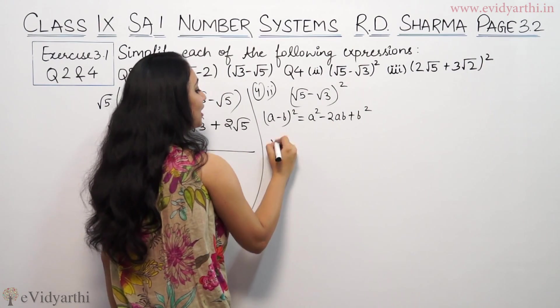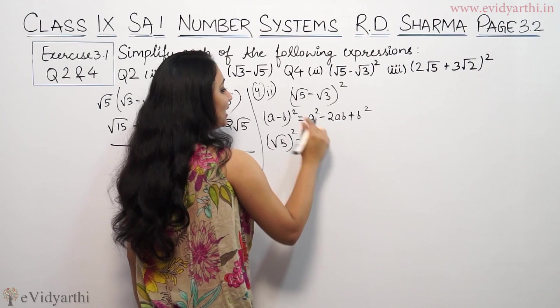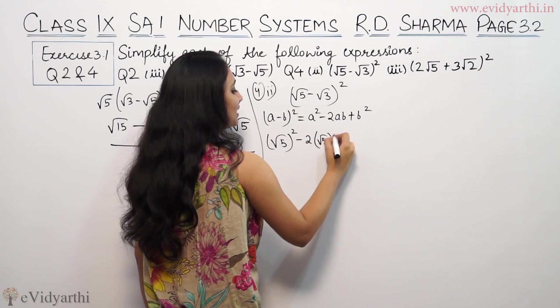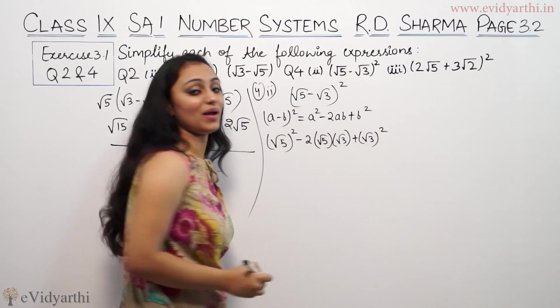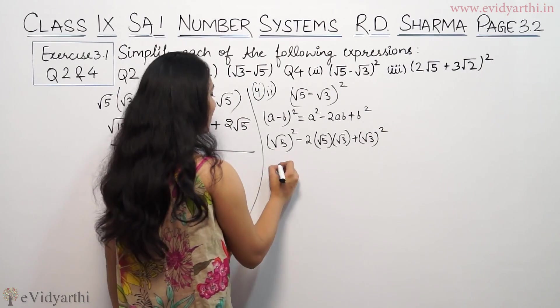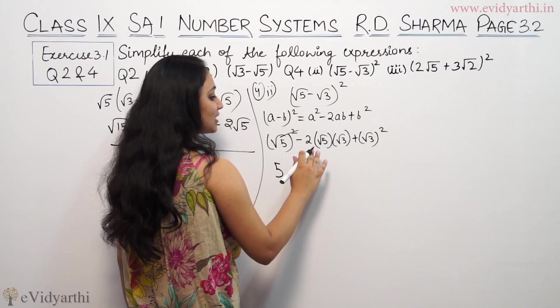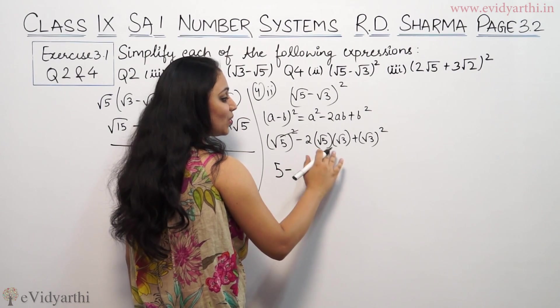So we will do the same as (√5)² - 2, here a is √5, b is √3, plus b² means (√3)². So (√5)² is 5 because square root cancels.